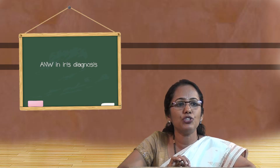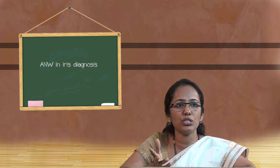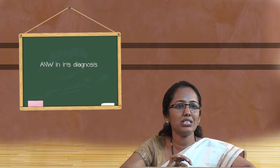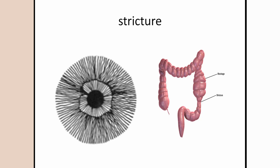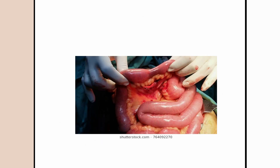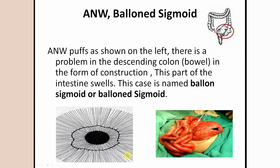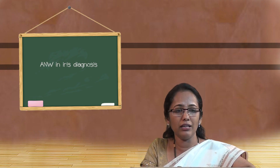These areas where fecal matter collects can be a source of infection. Different structures of the colon can also be identified from the autonomic nerve wreath — for example, a stricture, which is a narrowing of the large intestine. In this picture you can see how the stricture is represented in the iris: a dipping of the autonomic nerve wreath at the nine to ten o'clock position shows a stricture in the ascending colon. The actual picture of the stricture is also shown. Ballooning of the sigmoid colon is also noticed — a dilated autonomic nerve wreath indicates ballooning in the intestine.